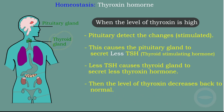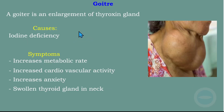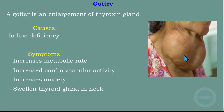Next is the disorder related to the level of thyroxine hormone — we call it goiter. Goiter is an enlargement of the thyroid gland. As you can see in this structure, this is what we call a goiter. This is the problem involving the thyroid gland. What causes goiter? It's an iodine deficiency — if our diet is lacking iodine, we will end up with this condition and swelling at the neck. Symptoms of goiter include an increase in metabolic rate, an increase in cardiovascular activity, increased anxiety, and a swollen thyroid gland in the neck.